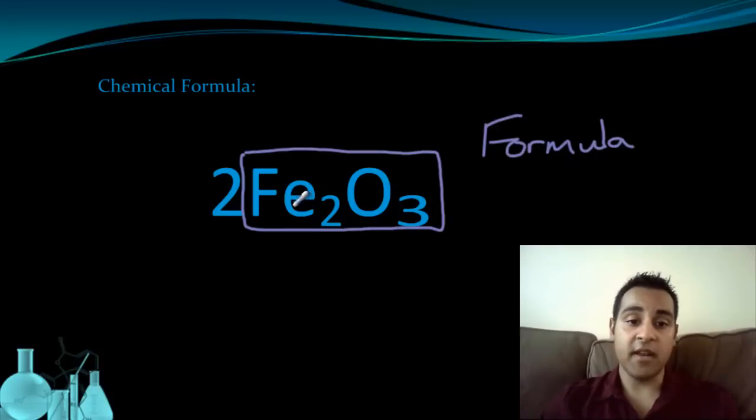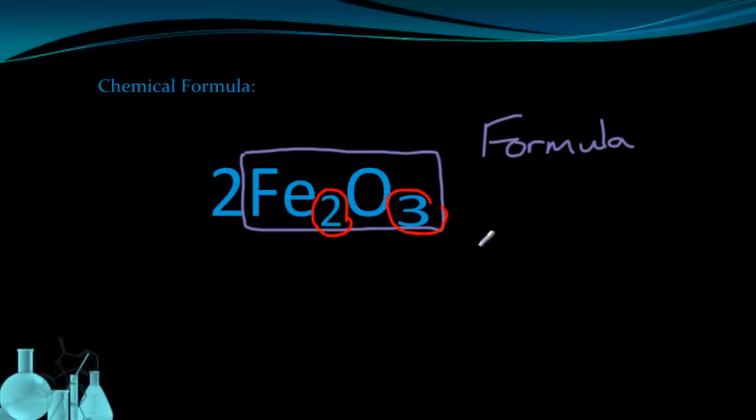The formula is made up of element symbols, the Fe and the O, as well as these smaller numbers that we call subscripts. Those tell us how many of each element are present. The subscript always applies to the element right in front of it, or the term right in front of it.